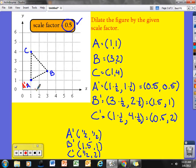B prime was 1 and a half, 1. So, there's my B prime. And C prime was a half, 2.